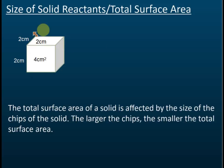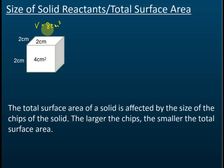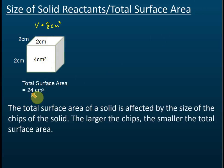What about the total surface area of the whole cube? The volume is 8 cm³, but what we want is the total surface area. A cube has six sides, so 6 multiplied by 4 gives us 24 cm². That is the total surface area for this cube.